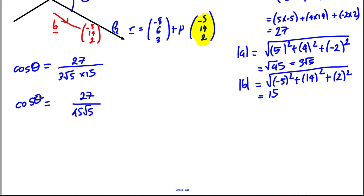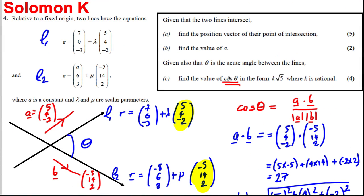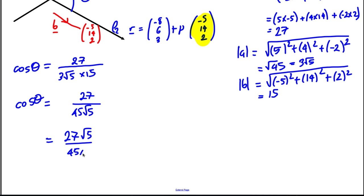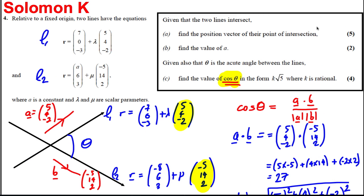The question asks for cos θ, not θ, so we're on the right track. The answer needs √5 in the numerator, so we rationalize by multiplying top and bottom by √5: cos θ = 27√5 / (45 × 5) = 27√5 / 225 = (3/25)√5.